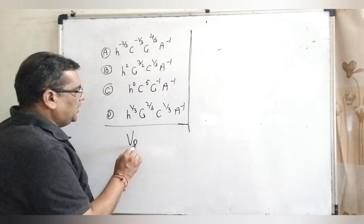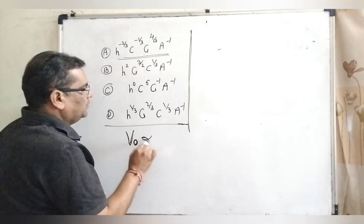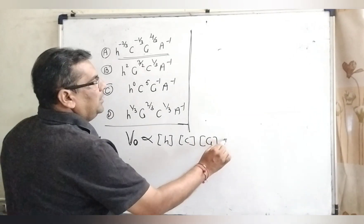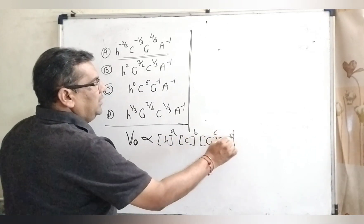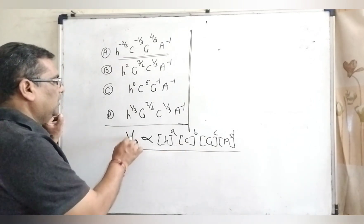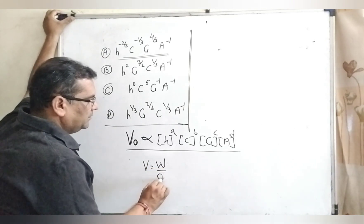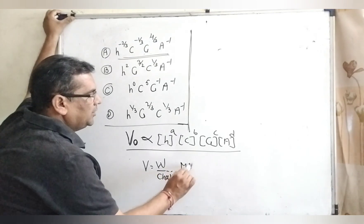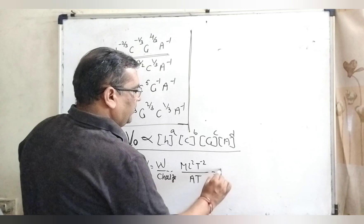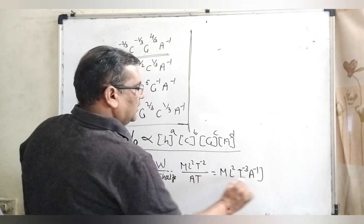Now, stopping potential V₀ is directly proportional to h^a, c^b, G^c, and A^d. We need to put all the dimensions one by one. The dimension of stopping potential: potential is work done divided by charge, so ML²T⁻² divided by AT, which gives ML²T⁻³A⁻¹. This is the dimensional formula of potential.